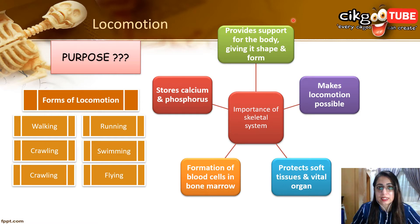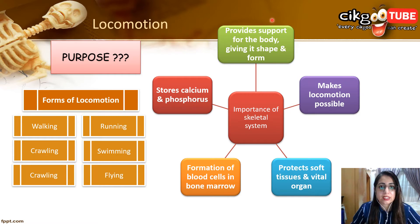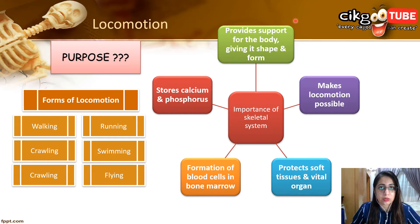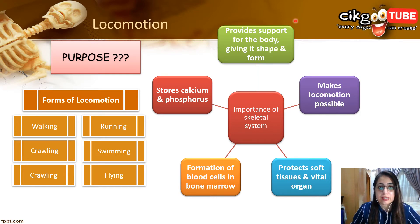The skeletal system also protects tissues and internal organs such as the brain, heart, and lungs from physical injuries. The bone marrow is a living tissue that produces red blood cells. Additionally, the skeletal system provides storage of calcium and phosphorus — minerals that can be used by other body parts in conditions of mineral deficiency. These are all the key functions of the skeletal system.